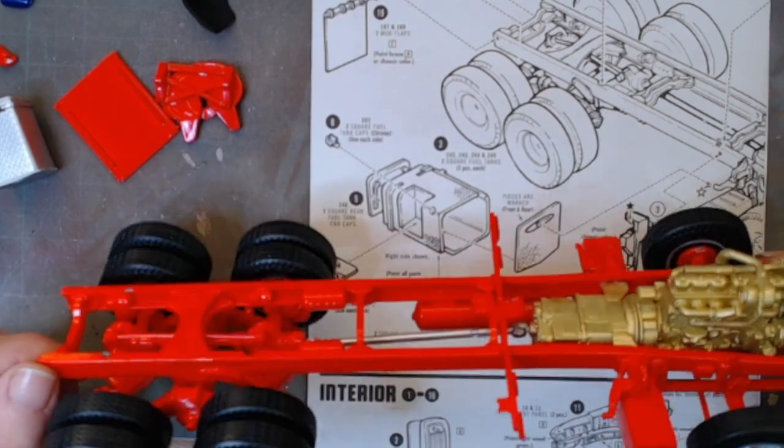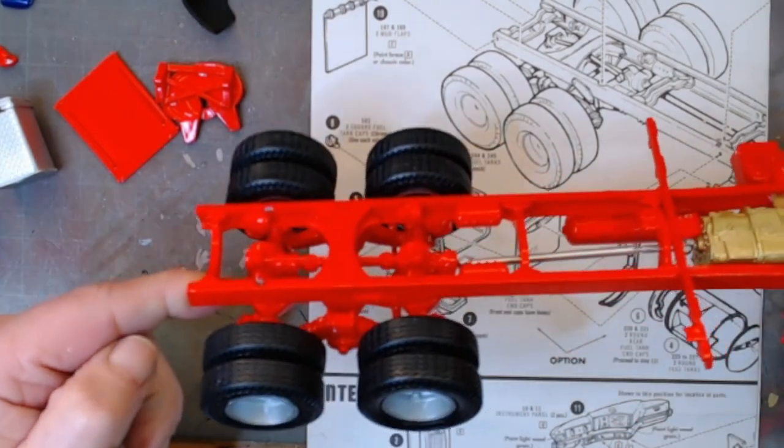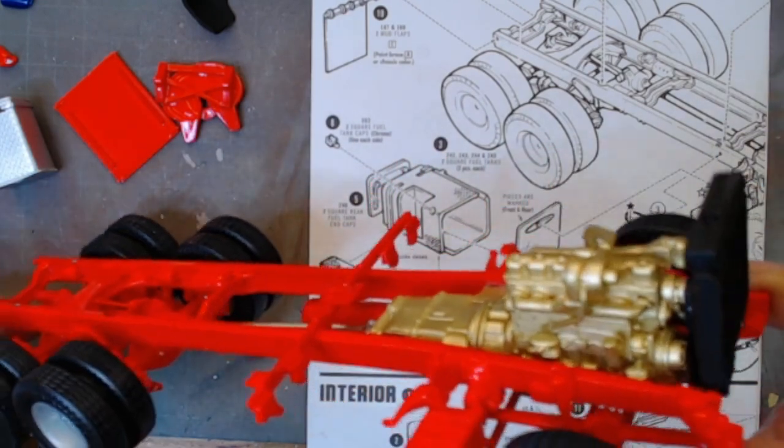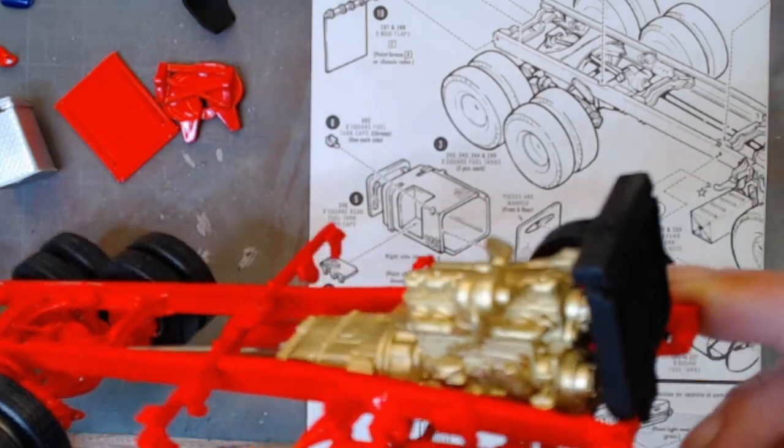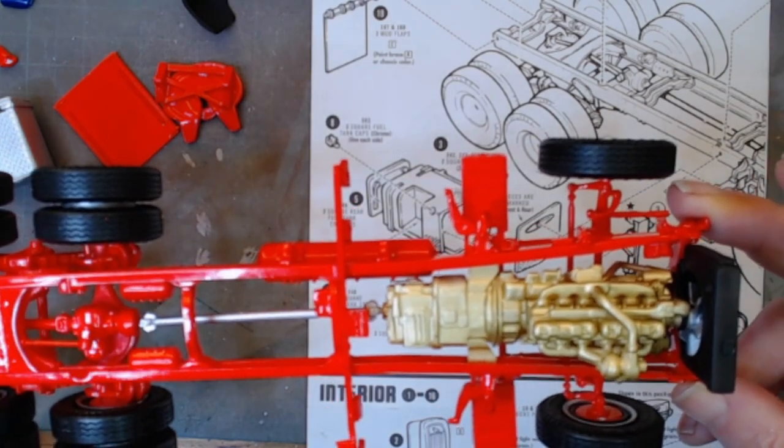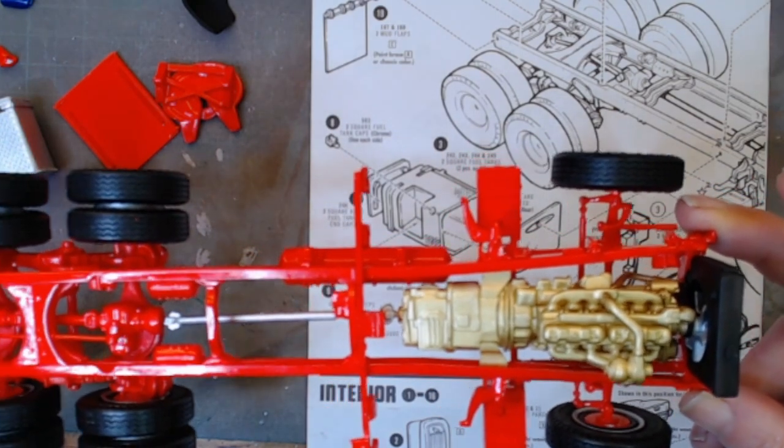So we've got bright red chassis. You can see we have got the radiator on the front and we've got the majority of the engine. It's 99.9% complete.